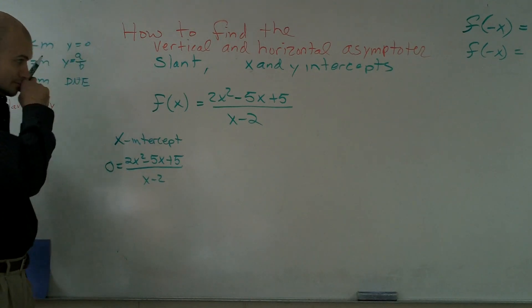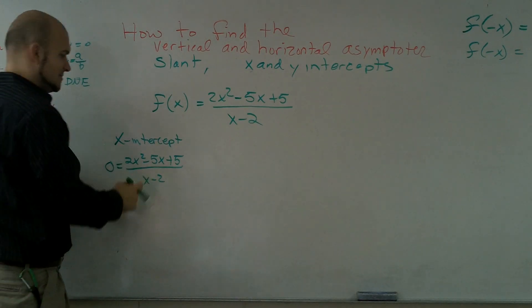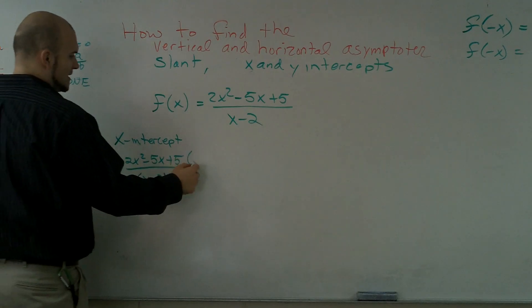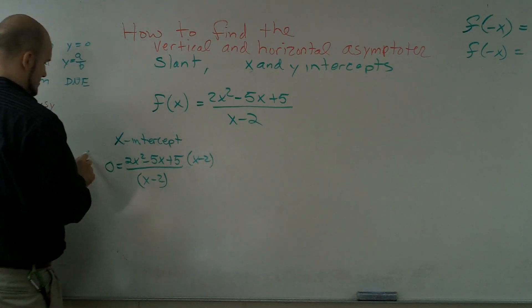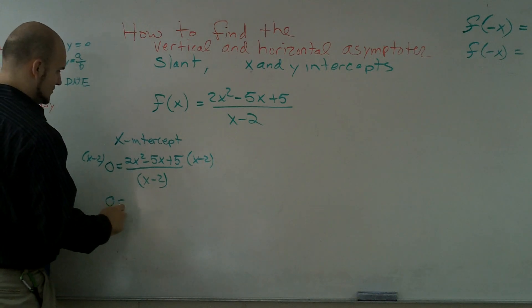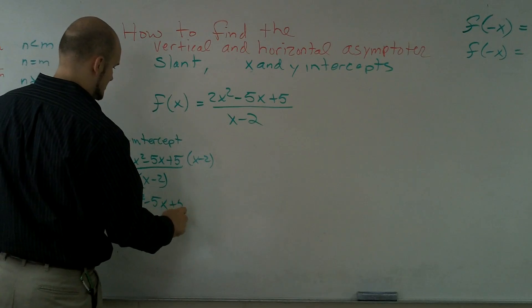So we're going to have 0 equals 2x squared minus 5x plus 5 all over x minus 2. Therefore now to solve for this, I got to multiply by x minus 2 on both sides.